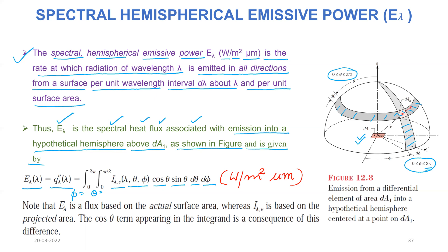Note that E_lambda is a flux based on the actual surface area, whereas i_lambda_e is based on the projected area. The cos(θ) term appearing in the integrand is a consequence of this difference. cos(θ) comes into picture because we take the projected area when considering the value of i_lambda_e.